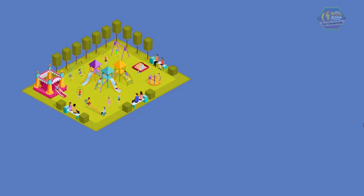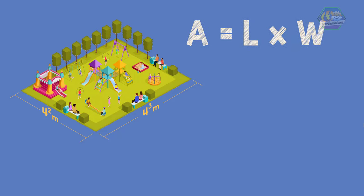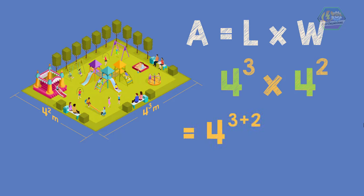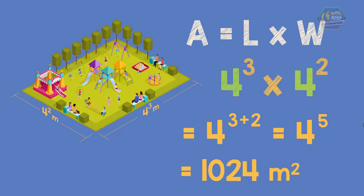Another example: find the area of a rectangular playground with a length of 4 raised to the power of 3 meters and a width of 4 raised to the power of 2 meters. To find the area of a rectangle, we need to multiply the length times the width. The base is common — that is 4. So by using Law 1, we just copy the common base and add the exponents. Therefore, the equation will become 4 raised to the power of 5, which means 4 will be multiplied 5 times. So the area of the rectangle is 1024 square meters.